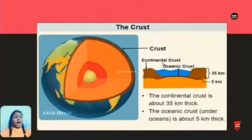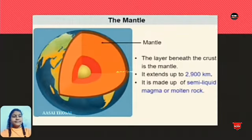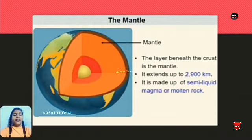Next layer is the mantle. The layer beneath the crust is the mantle. It extends up to 2,900 kilometers. It's made up of semi-liquid magma or molten rock. It is coming from the lava.